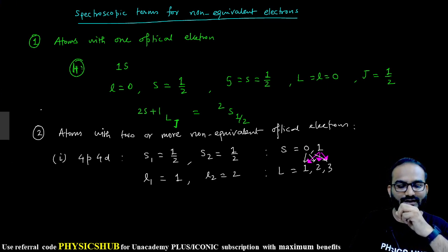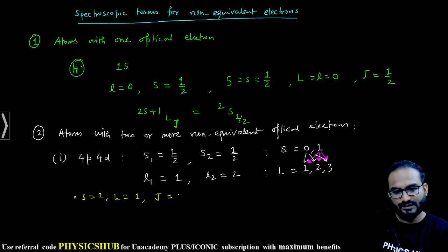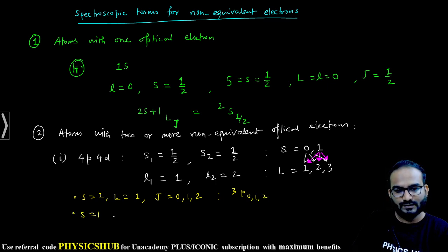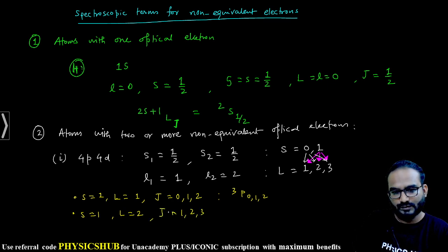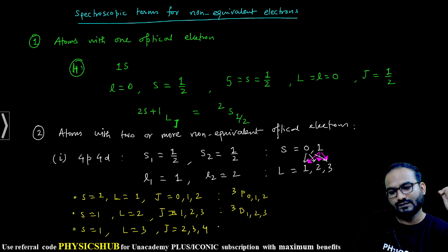Looking at the terms: if S=1 and L=1, then J will be 0, 1, and 2, giving levels ³P₀, ³P₁, ³P₂. If S=1 and L=2, then J will be 1, 2, 3, giving ³D₁, ³D₂, ³D₃. If S=1 and L=3, then J will be 2, 3, 4, giving ³F₂, ³F₃, ³F₄.